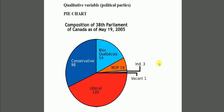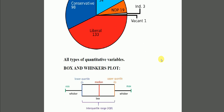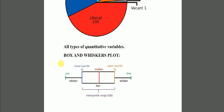We have seen how to make a pie chart in one of our videos — if you haven't seen it yet, have a look at it. If you are in the first year of ESO, this is all you have to know. But in the third year of ESO, you also have to know the Box and Whiskers plot. Box and Whiskers is used for all types of quantitative variables — not qualitative.